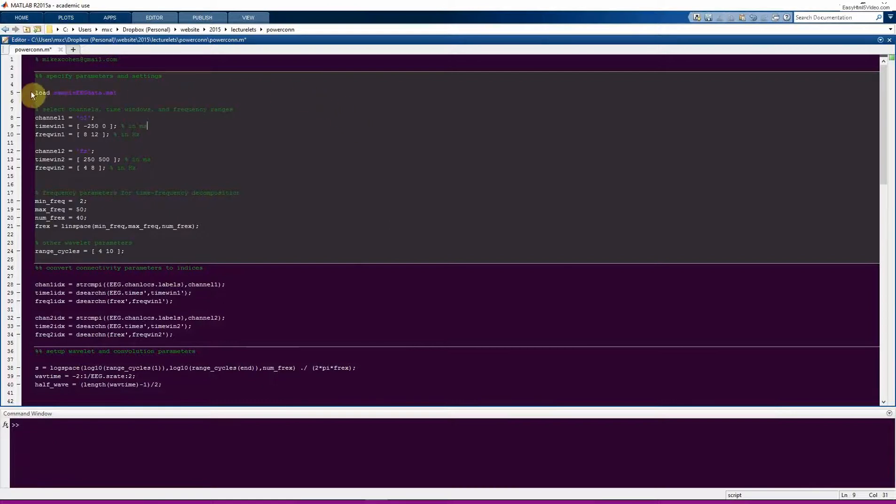So here we load in the data. Here we specify the parameters that we want to correlate. So we're going to correlate activity at O1 with activity in FZ. And for O1, the time window is going to be pre-stimulus, 250 milliseconds before stem onset up to stem onset in the alpha band. And then we're going to correlate that trial by trial with activity in post-stimulus period, 250 to 500 milliseconds, in the theta band in FZ. So that's these parameters for the correlation analysis.